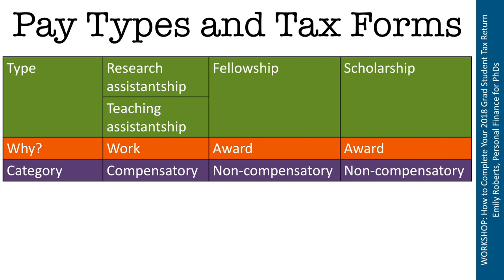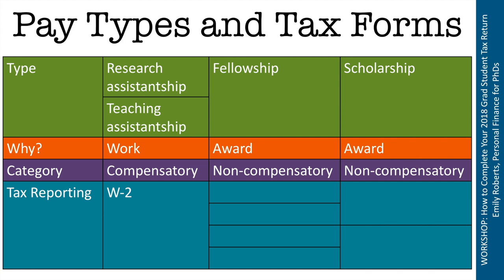It's very possible that your university does not use the terms assistantship or fellowship exactly the way I'm using them. So to firmly and definitively divide compensatory from non-compensatory pay in terms of grad student income, we need to look at the tax forms associated with each type. If you are receiving compensatory pay, you will receive a W-2 at tax time for your stipend or salary. That is the most definitive thing: you will receive a W-2.